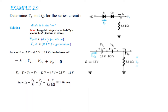Now we find the current ID. ID equals IR, and since we know VR which equals V0, we use ID equals V0 divided by R. V0 is 11V and resistance is 5.6 kilohms, therefore ID current is 1.96 mA.